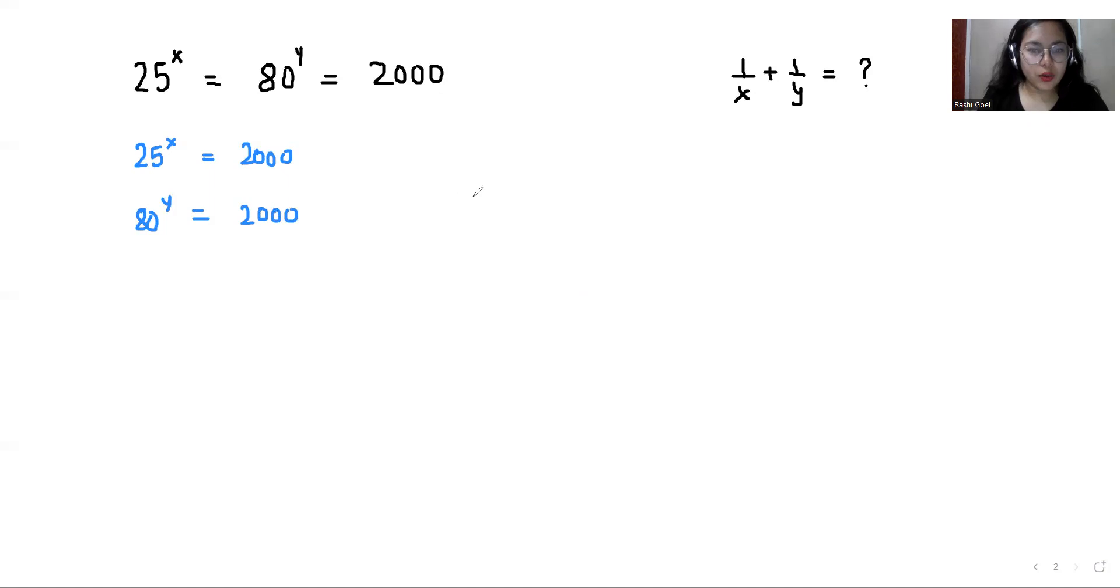Now we know the identity of exponents that a power b power c equals a power bc. So if I multiply the same exponent, same power to both sides, I can write it as 25 power x power y equals 2000 power y. Same I can write with the second one: 80 power y power x equals 2000 power x.